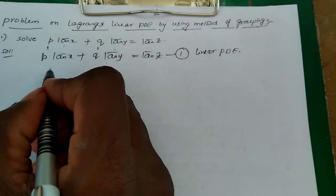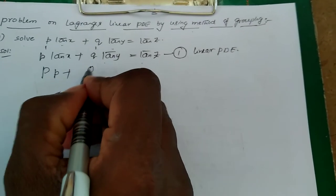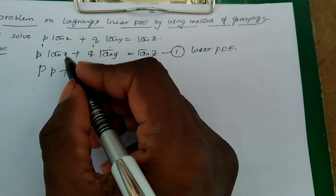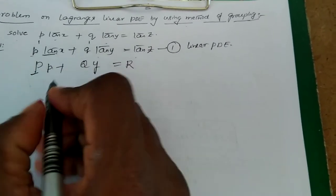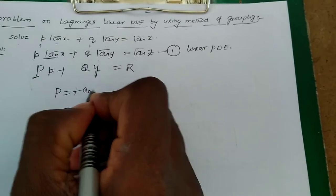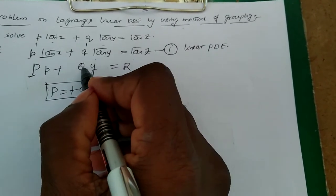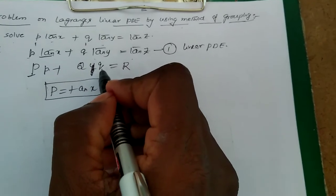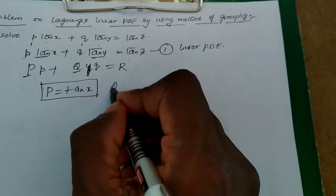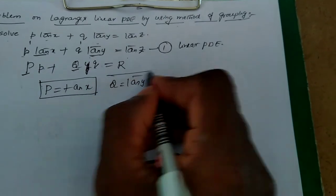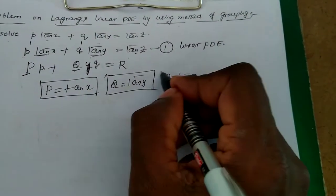Since it is a linear PDE, we compare the given PDE with Lagrange's linear equation: capital P into small p plus capital Q into small q equal to capital R. By comparing, the coefficient of small p is capital P, so P equal to tan x. The coefficient of small q gives capital Q equal to tan y. By comparing RHS, we have capital R equal to tan z. This is step 1.